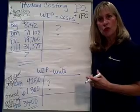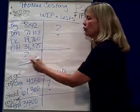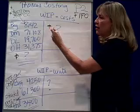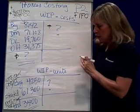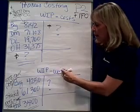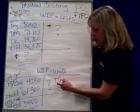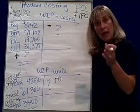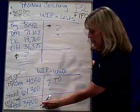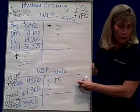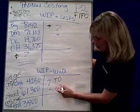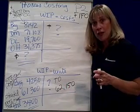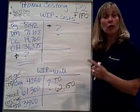Your mission, should you choose to accept it, is to figure out how much cost should be assigned to ending work in process, and how much cost should be assigned to the units transferred out of the department. First, we need to figure out how many units transferred out — I'll abbreviate that TO. Beginning plus started minus ending gives us units transferred out, which equals 62,150. Whether I do average costing or FIFO, these are the facts that we will work with.